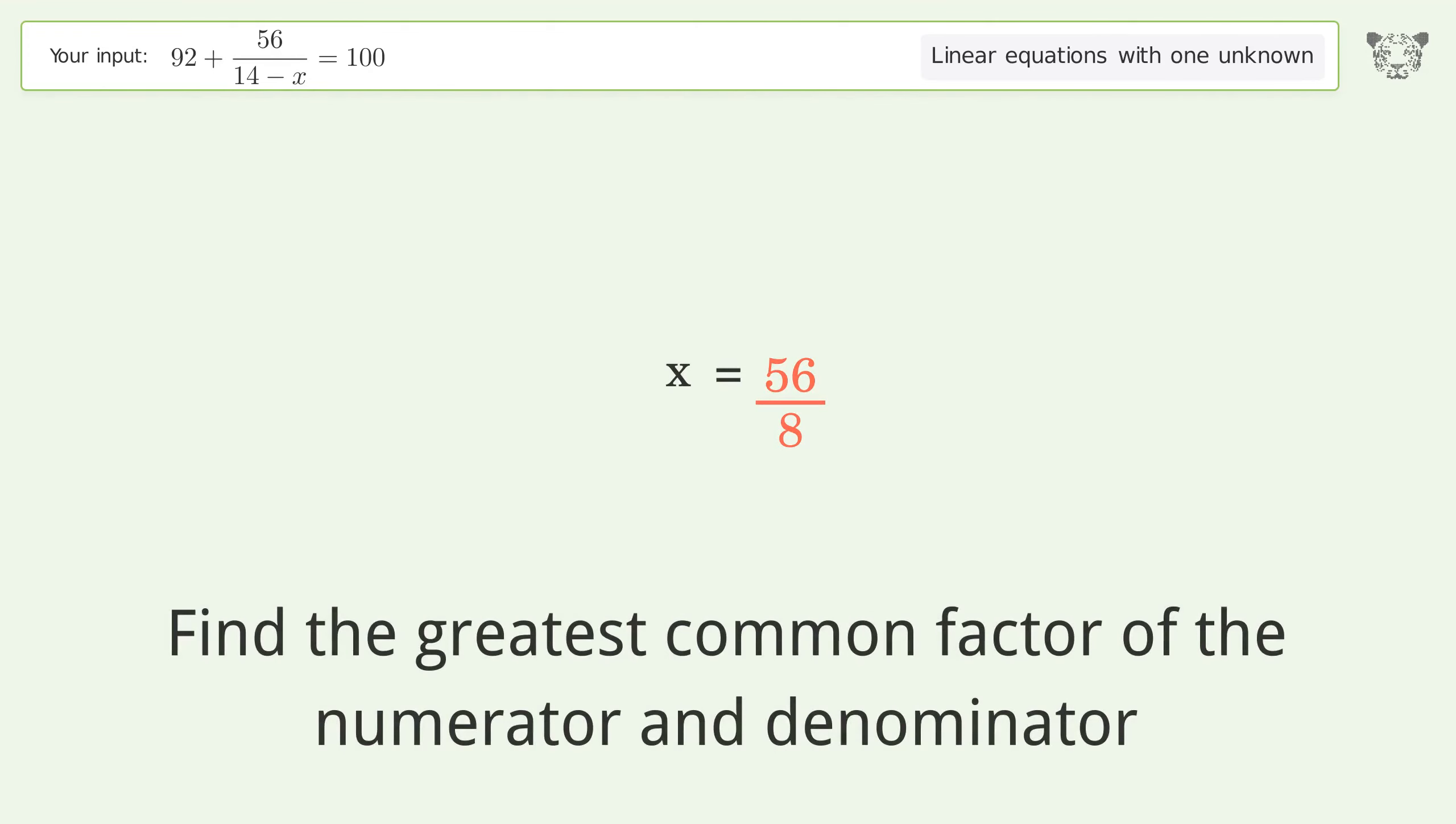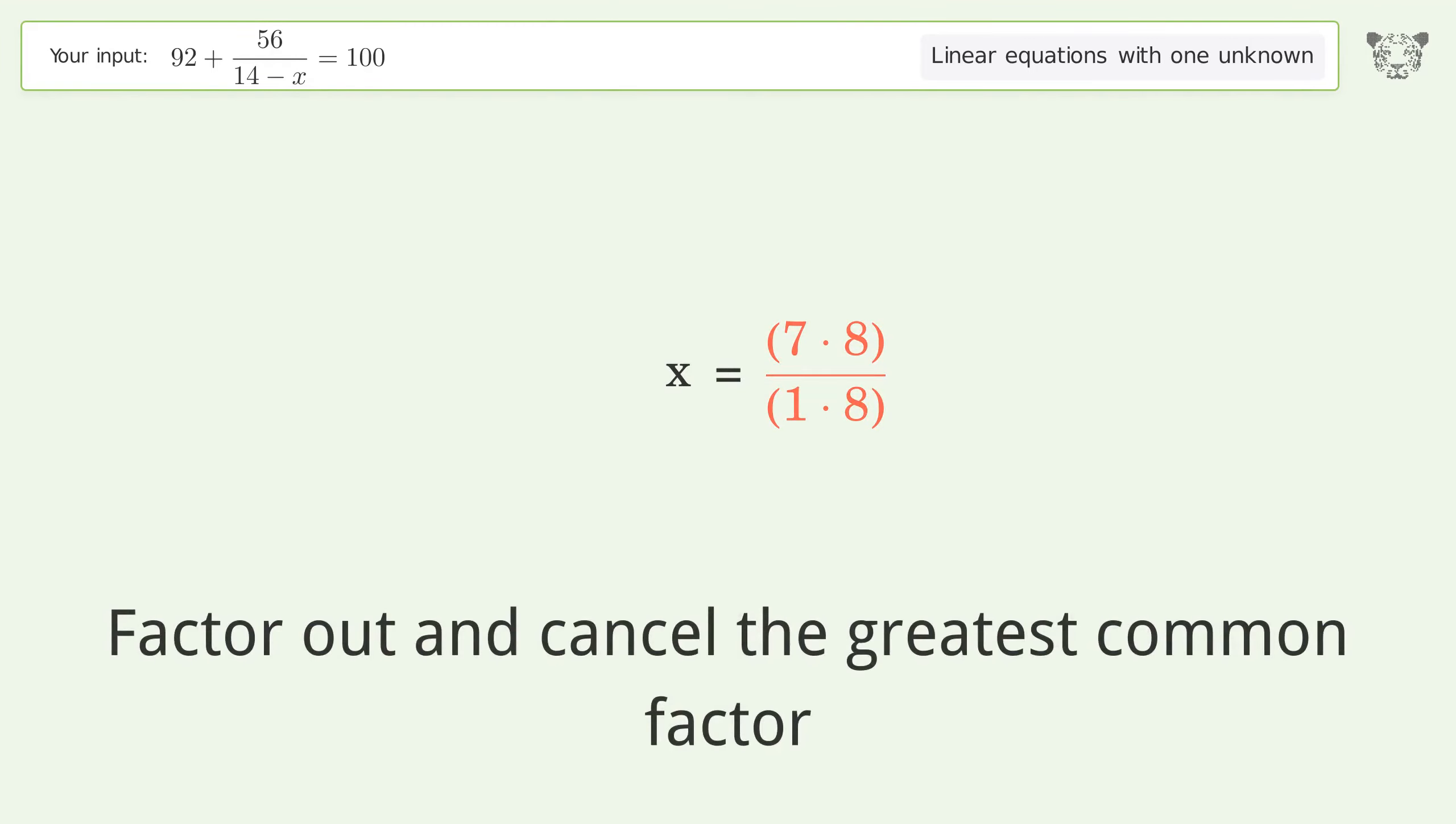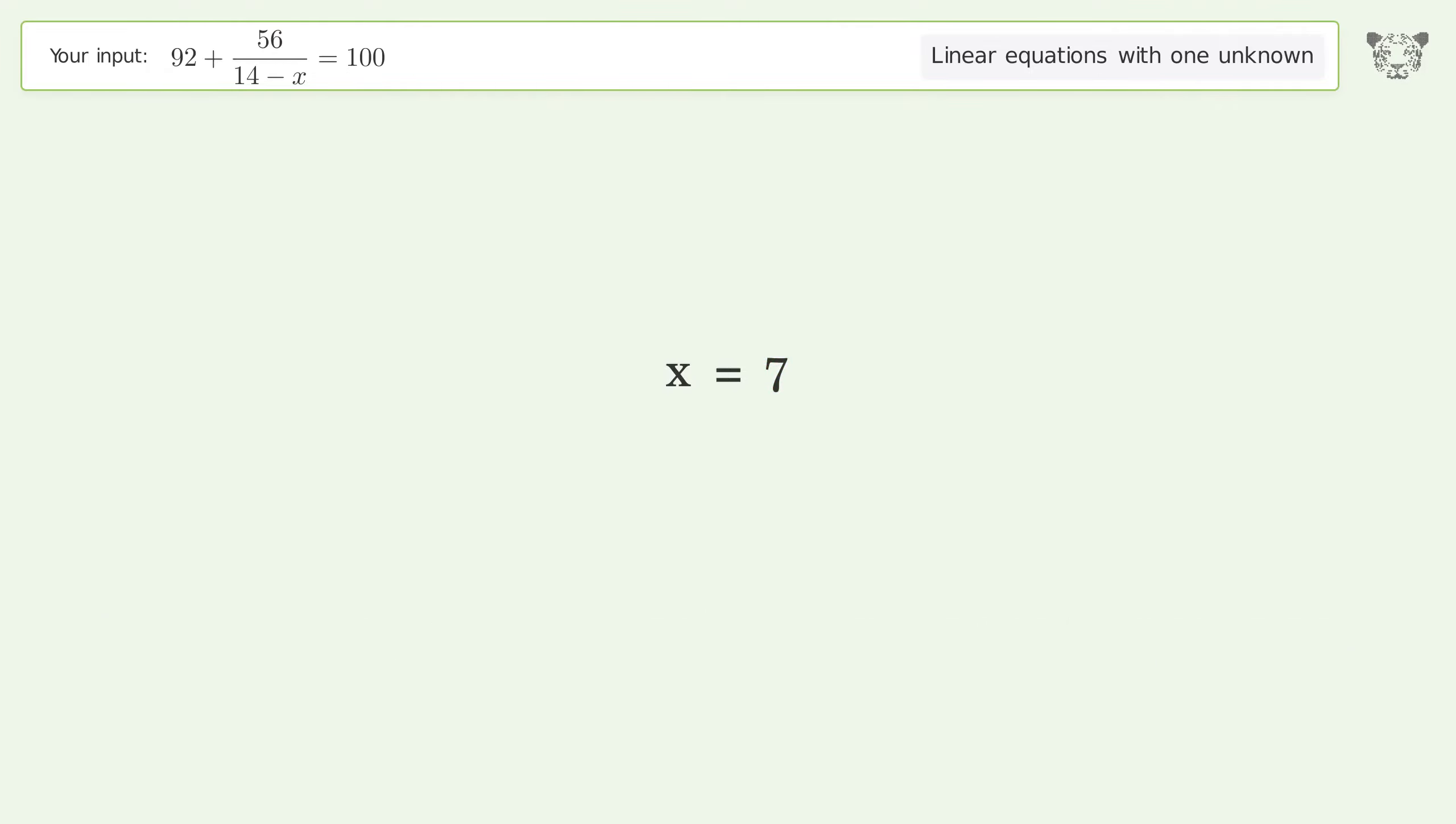Find the greatest common factor of the numerator and denominator. Factor out and cancel the greatest common factor. And so the final result is x equals 7.